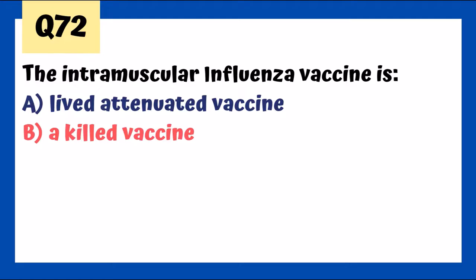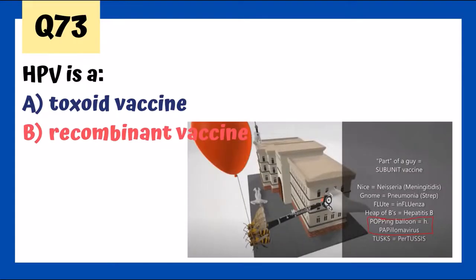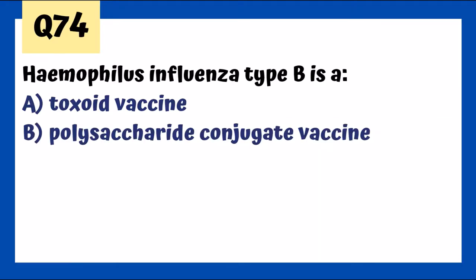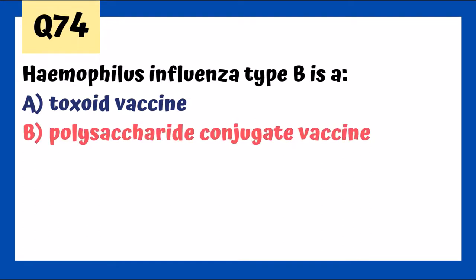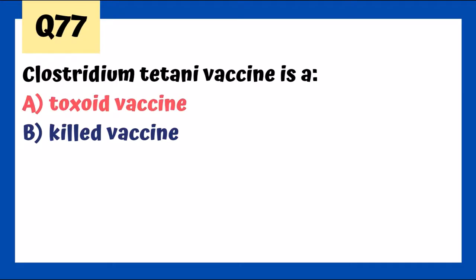HPV is a recombinant vaccine — not toxoid. The only toxoid vaccines are Corynebacterium diphtheriae and tetanus. Haemophilus influenzae type B is a polysaccharide conjugate vaccine, not toxoid.